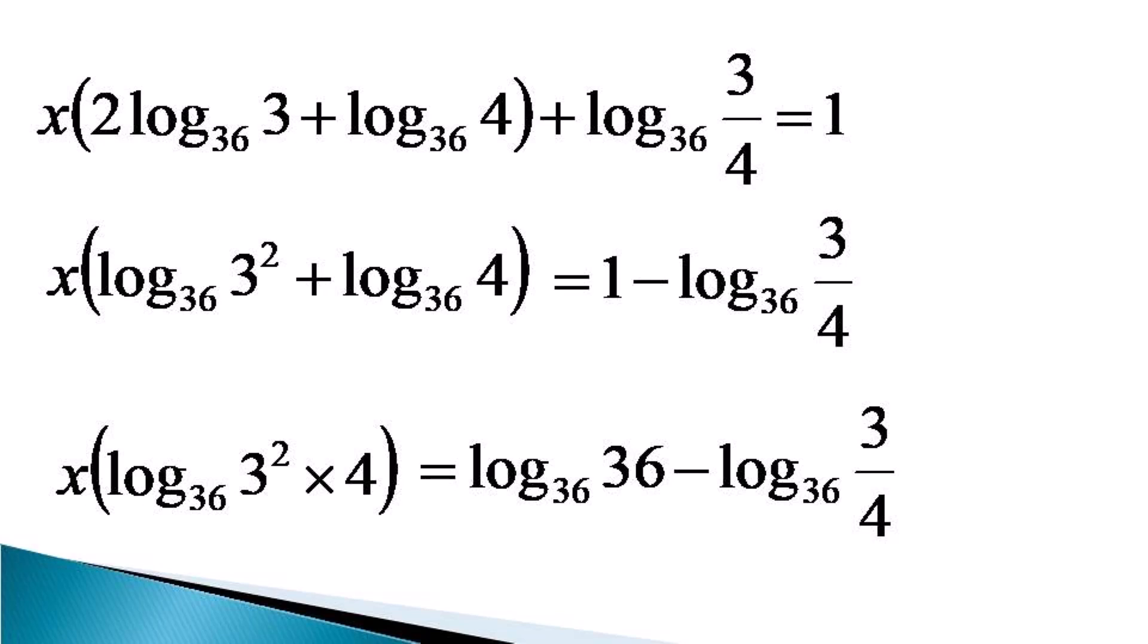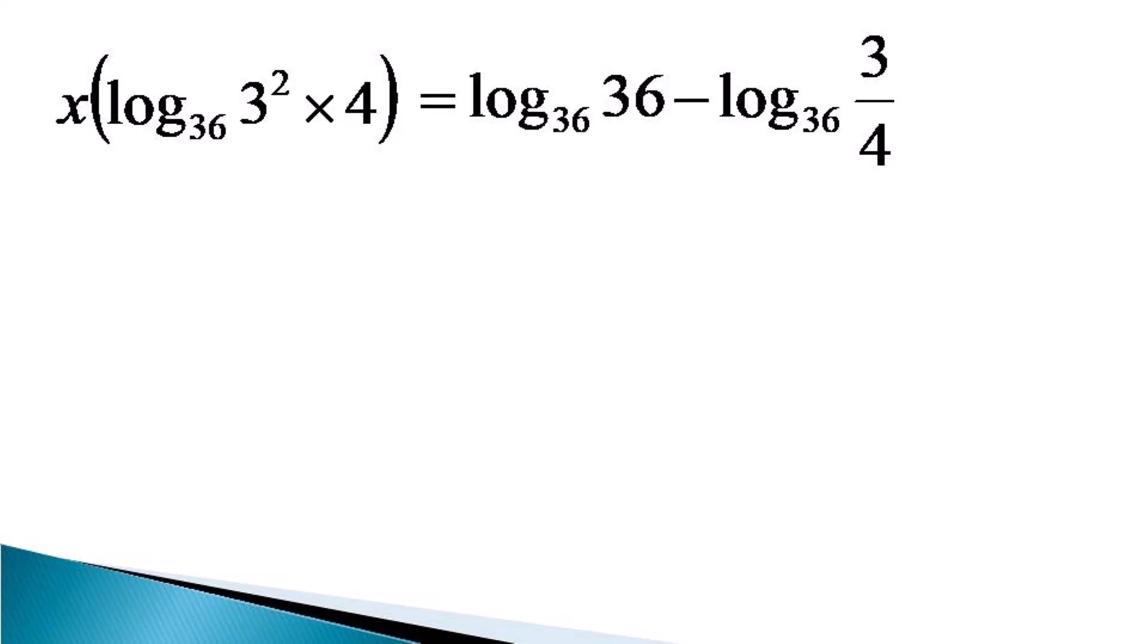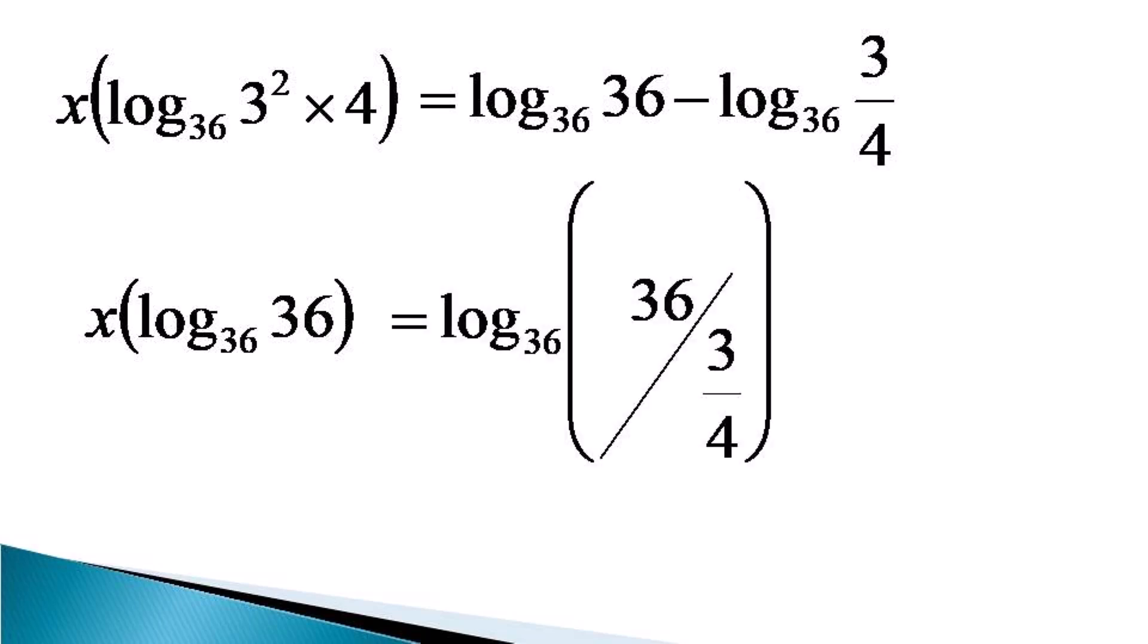So the left hand side, 3 squared times 4 becomes 36, and here taking log to the base 36 has helped. x log 36 to the base 36 becomes 1, or simply x, which equals log 36 to the base 36.